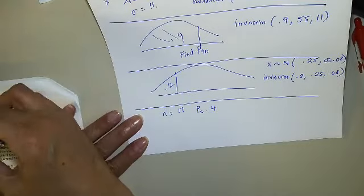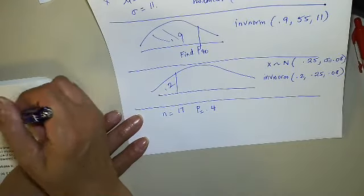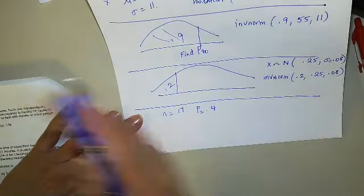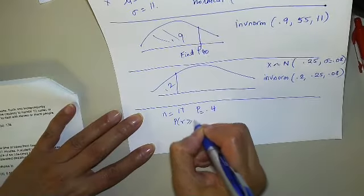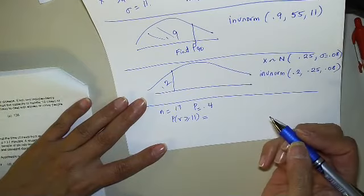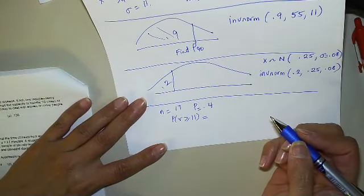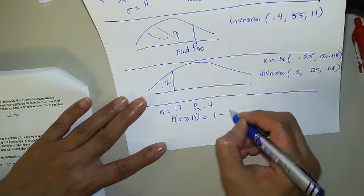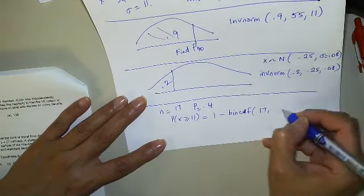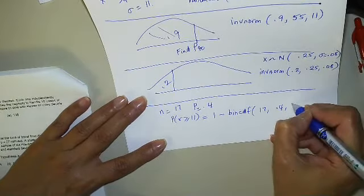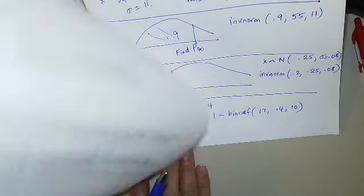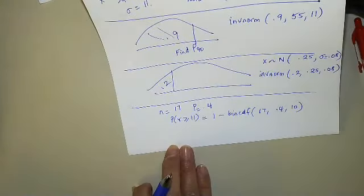17 people have been exposed to a particular disease, n equals 17. Each one independently has a 40 percent chance of contracting the disease, p equals 0.4. A hospital has the capacity to handle 10 cases of the disease. What is the probability that the hospital will have to deal with 11 or more people who have contracted the disease? R greater than or equal to 11. How should I do this? N, p, perfect.